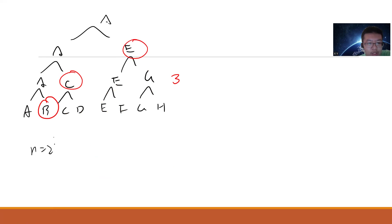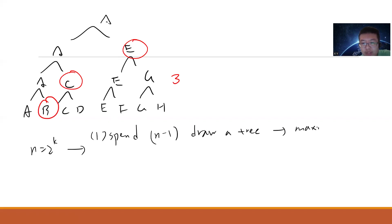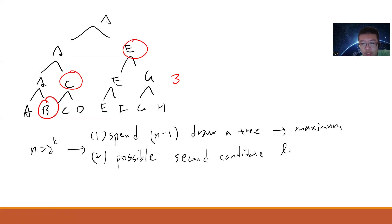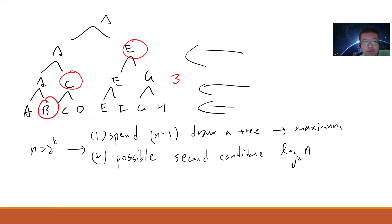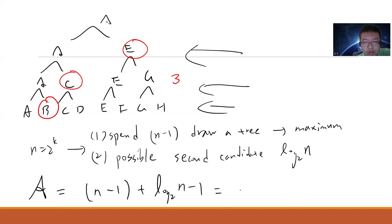The answer is: for n equals 2 to the k, you first spend n minus 1 comparisons to draw a tournament tree and find the maximum. For the second largest, the possible candidates are log₂n — because for each layer of the tree, only one survives, and there are log₂n layers. Then you make those log₂n candidates fight each other, which takes log₂n minus 1 comparisons. So the total answer is n minus 1 plus log₂n minus 1, which equals n plus log₂n minus 2. Asymptotically: n plus log₂n.